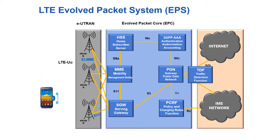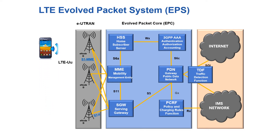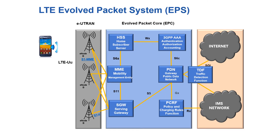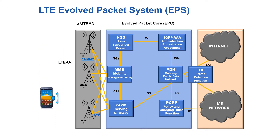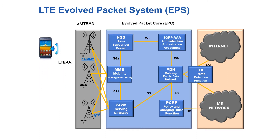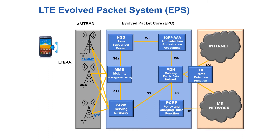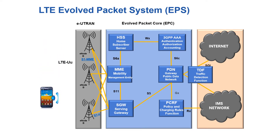The MME will then assign a serving gateway that we can connect up to. Once connected to the serving gateway, we're passed over to the public data network gateway, which goes through a TDF — the Traffic Detection Function. The TDF provides deep packet inspection to find out exactly what type of traffic is passing, and if required, it can mark packets accordingly for different types of prioritization. The TDF works very closely with the PCRF, the Policy and Charging Rules Function.